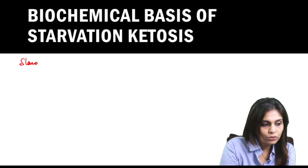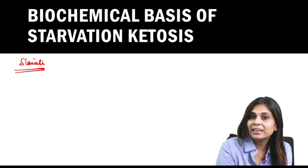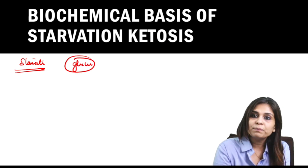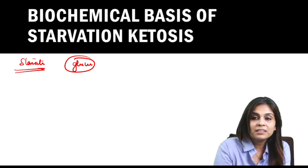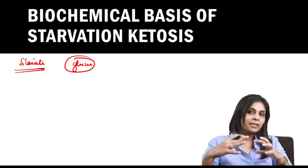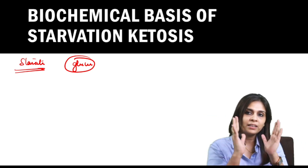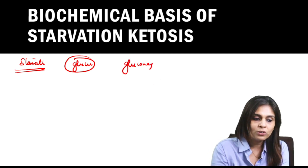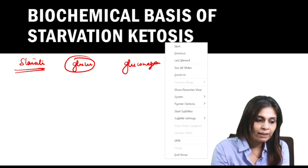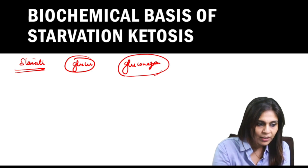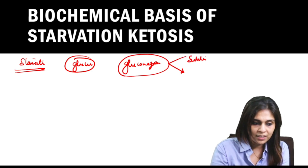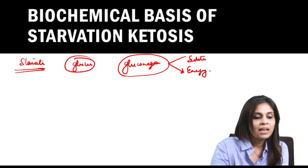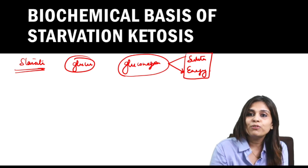In starvation, your metabolic system forgets about everything else and its only aim is to increase blood glucose, because the principal cells of the body — neurons and RBCs — are dependent only on glucose. The metabolic integration tries to maintain plasma glucose in starvation. To maintain plasma glucose, the body is dependent on gluconeogenesis, which is an energy-consuming process needing both a substrate and energy.